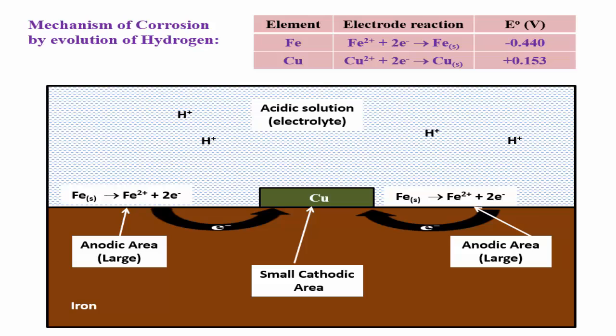The H+ ions present in the acidic solution consume these two electrons and evolve hydrogen gas. This is the cathodic reaction or reduction process.